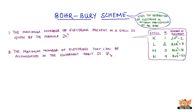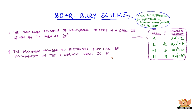Number 2 — the maximum number of electrons that can be accommodated in the outermost orbit is 8. This rule is also called the octet rule. It is a very important rule because it decides the valency of an atom.